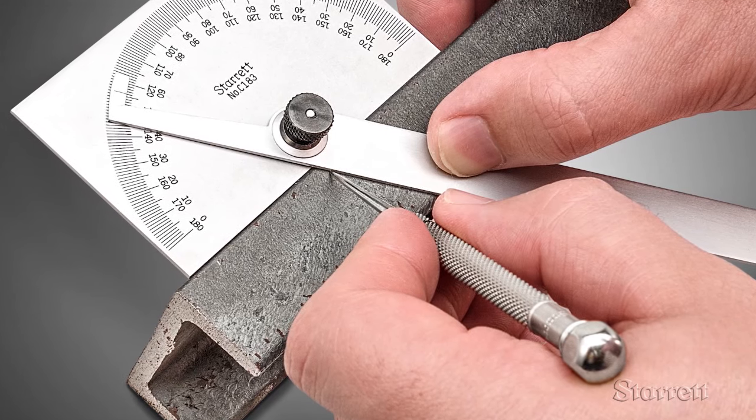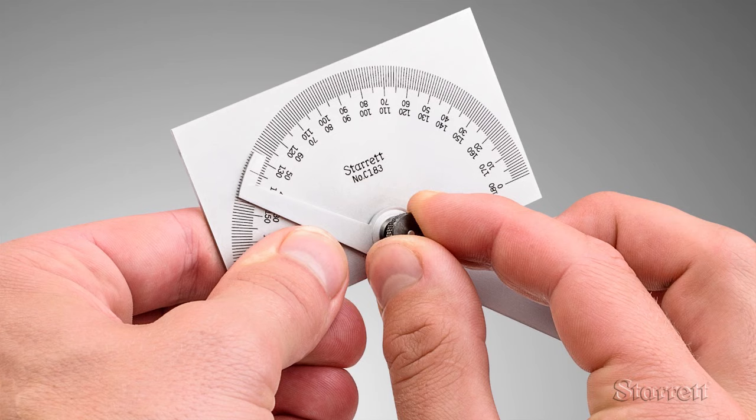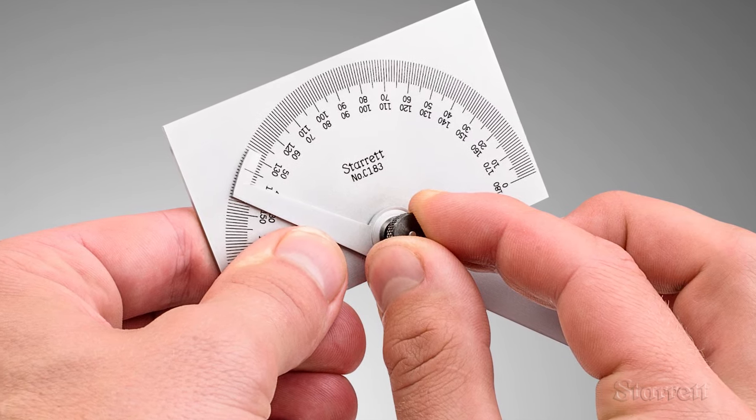The C-183 is not the tool for inspecting precise angle tolerances, but it is accurate to within a degree, which meets many requirements.